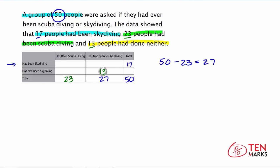Next, to find how many people have not been scuba diving but have been skydiving, we take 27 minus 13, which equals 14. So 14 people have not been scuba diving but have been skydiving. Now for the cell representing has been scuba diving and has been skydiving — the number of people who have done both — we take the skydiving total of 17 minus 14, which equals 3. So 3 people have done both.